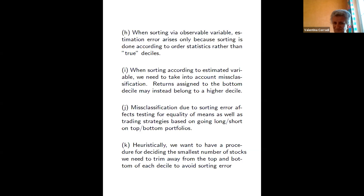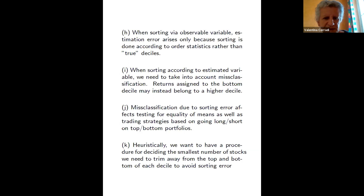When sorting according to an estimated variable, we have an extra component due to estimation error — in particular, contamination of stocks being assigned to the wrong quantiles. If we are misallocating stocks, when we compare mean returns across different quantiles we might have a biased outcome because we believe we are comparing means of extreme quantiles, but we are actually comparing something different due to misclassification.